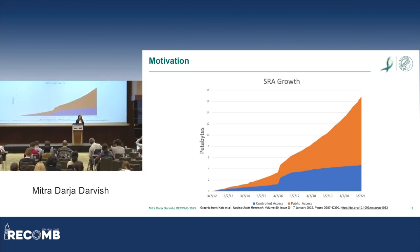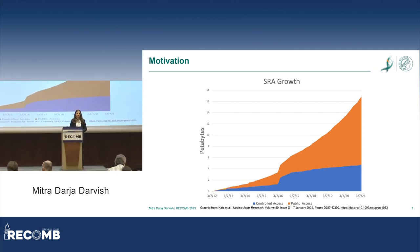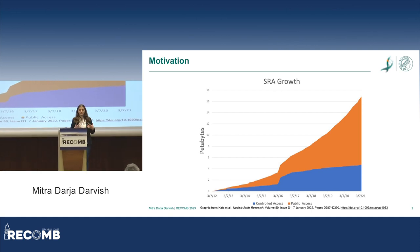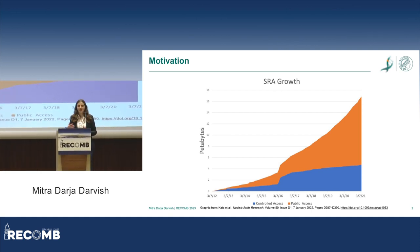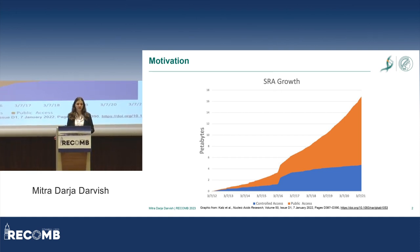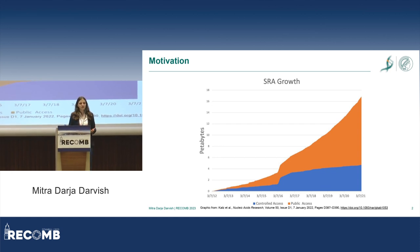The problem we face today is that while we have all this data, it's not really easy to search through it. For example, if you're searching for overexpressed genes in all these data, you can't easily do that.